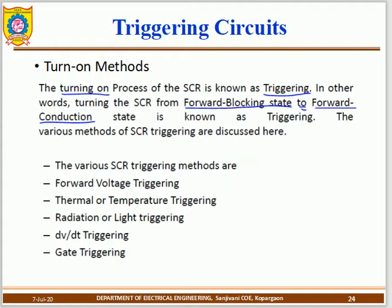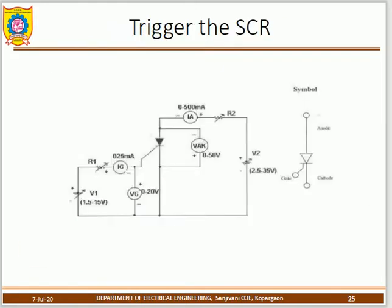To switch off the SCR, you use either natural commutation or forced commutation. Now let's go through the triggering or firing circuit. In the previous video, you learned about the static characteristics of the SCR and conducted laboratory tests.